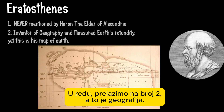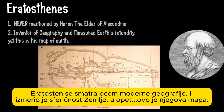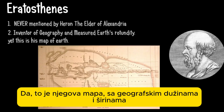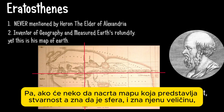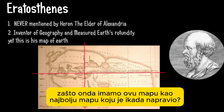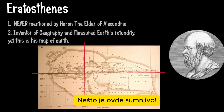We move on to number two: geography. Eratosthenes is considered to be the inventor of geography, and he measured Earth's rotundity. Yet this is his map — with longitude and latitude as straight boxes. So if anybody was going to draw a map representative of reality, since he knew it was a sphere and he knew the size, why do we have this map as the best he ever produced? Something's fishy there.